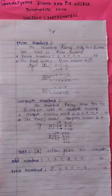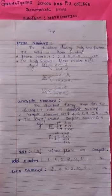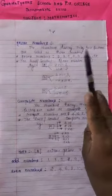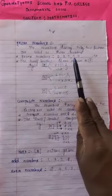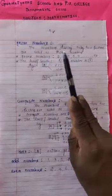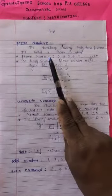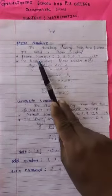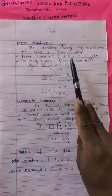Next we have prime numbers. The numbers having only two factors are called as prime numbers. So the prime numbers are 2, 3, 5, 7, and so on.